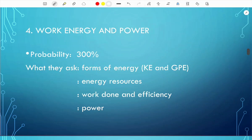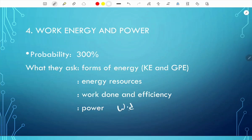The fourth topic is work, energy, and power. The probability is 300%, so expect 2 or 3 questions. They ask about forms of energy — usually kinetic energy or gravitational potential energy — and energy resources, where they give a description and ask you to identify the resource. They also ask about work done and efficiency, and power. Remember: power is work done over time, or energy transferred over time.